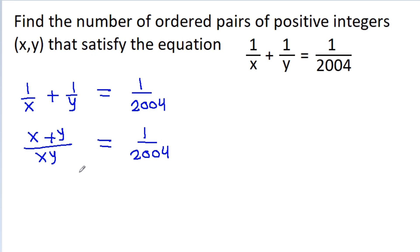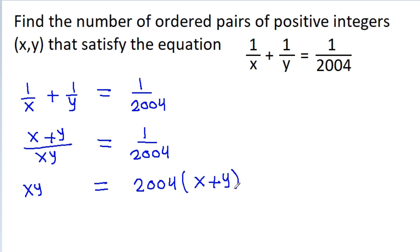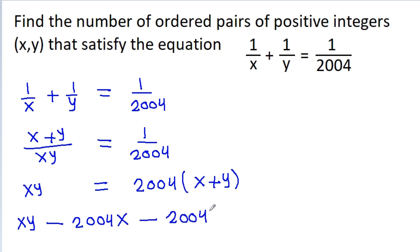And if we cross multiply, then we get xy = 2004(x + y). And it is xy - 2004x - 2004y = 0.